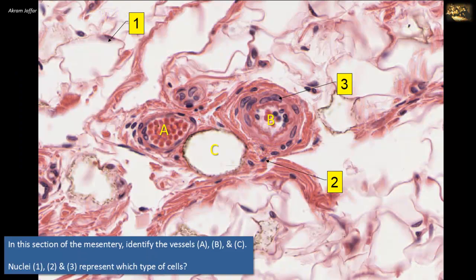In this section of the mesentery, identify vessels A, B, and C. Nuclei 1, 2, and 3 represent which type of cells?